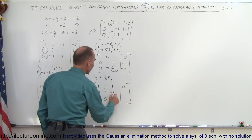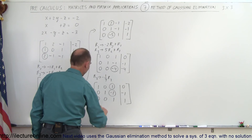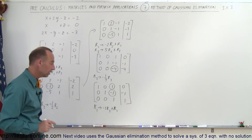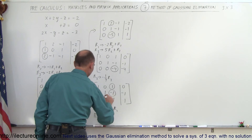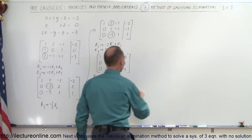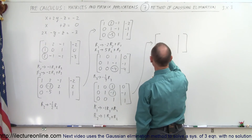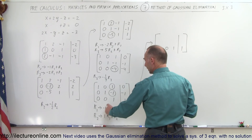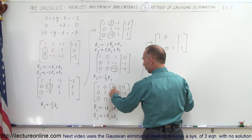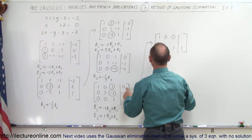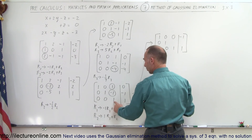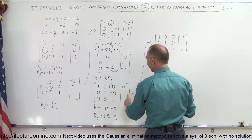All we have left to do now is turn the two remaining entries in the third column into zeros. We take the first row and replace it by the negative of that number, negative 1, times the third row added to the first row. We take the second row and replace it by the negative of that number, positive 1, times the third row added to the second row. The third row does not change: 0, 0, 1, 1. For the first row: 1 and 0 remain; negative 1 times 1 added to 1 becomes 0; negative 1 times 1 added to 0 becomes negative 1. For the second row: 0 and 1 stay; 1 times 1 added to negative 1 becomes 0; 1 times 1 added to negative 1 becomes 0.